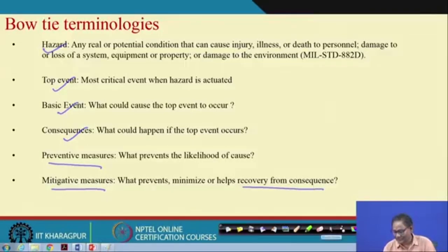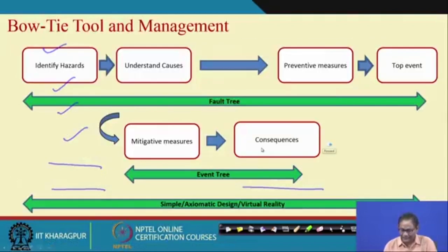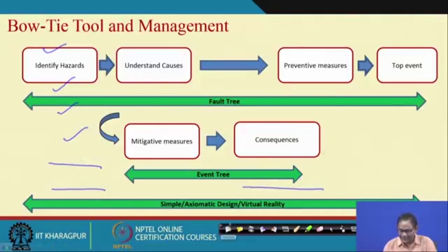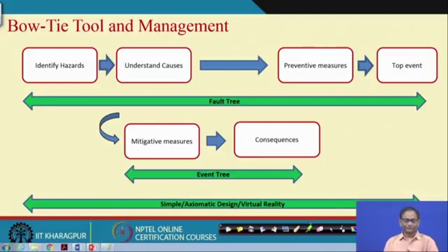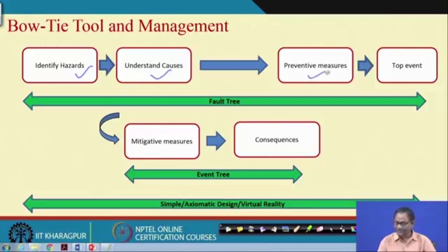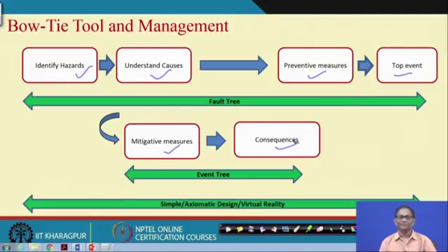As told, the bow tie tool follows a sequence: from the hazard, then causes, then preventive measures, then top event, then mitigating measures, and finally consequences. There is a clear sequence — we reference the top event probability when talking about fault tree, and when we bring in consequences, we introduce the event tree.